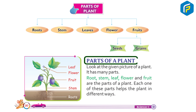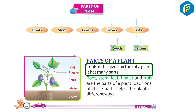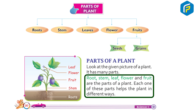Grain. Parts of a Plant: Look at the given picture of a plant. It has many parts — Root, Stem, Leaf, Flower, Fruit. Each one of these parts helps the plant in different ways.